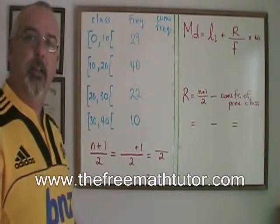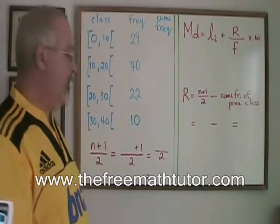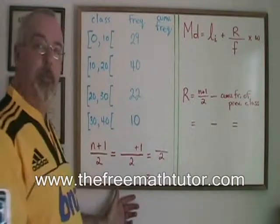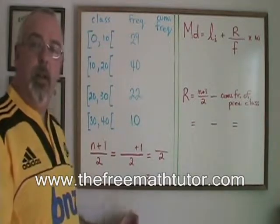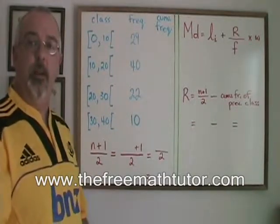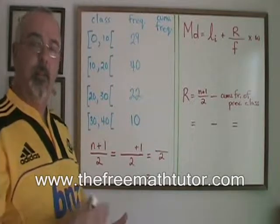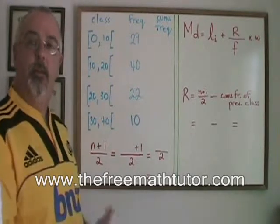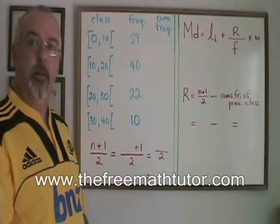Finding the median of a set of data is usually very straightforward. We use this little formula, n plus 1 over 2, and it shows us the position of our median within that data. Then we just have to count from one end or the other to find the median so we can identify it.